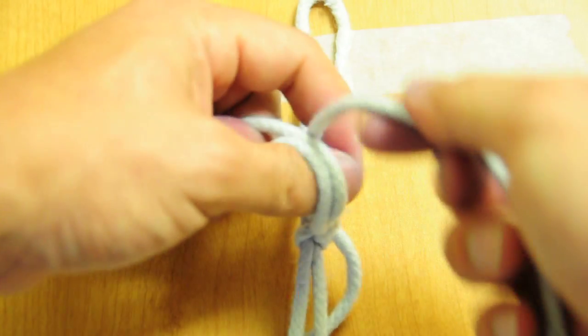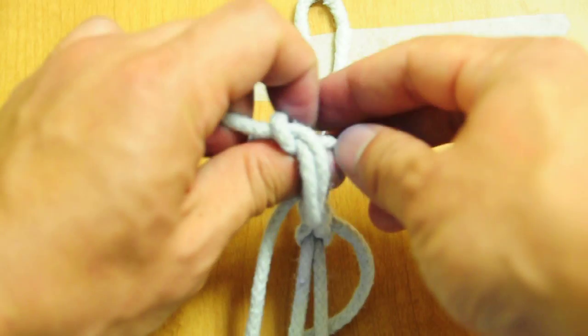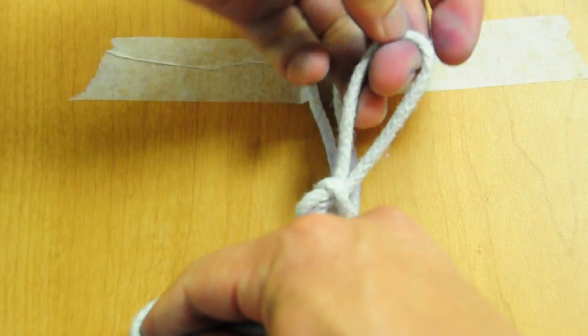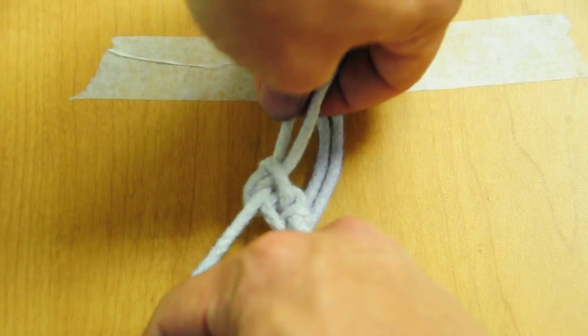And then now we're on the thumb. So same thing. Pass the free hand under. Cross your hands. Again, one, two, one, two.